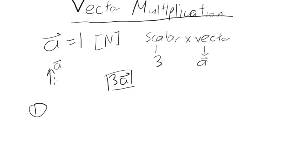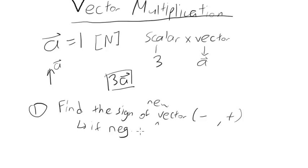First step you're going to do is find the sign of the new vector. Find the sign meaning, is it negative or is it positive? If it's negative, then direction is opposite.